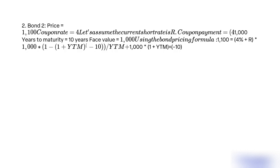Bond 2: Price equals $1,100. Coupon rate equals 4% plus the current short rate r, so coupon payment equals (4% + r) × $1,000. Years to maturity equals 10 years. Face value equals $1,000. Using the bond pricing formula: $1,100 = (4% + r) × $1,000 × (1 − (1 + YTM)^−10) / YTM + $1,000 × (1 + YTM)^−10.